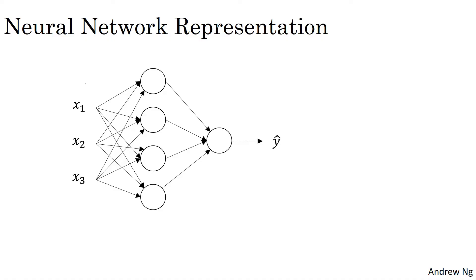We have the input features, X1, X2, X3, stacked up vertically. And this is called the input layer of the neural network. So maybe not surprisingly, this contains the inputs to the neural network.